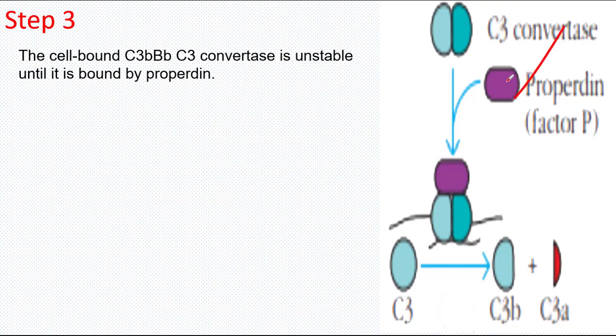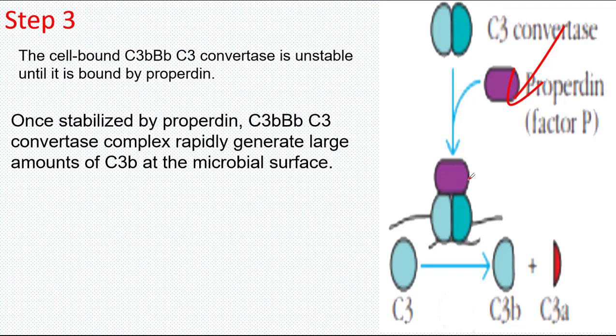The cell-bound C3BB Convertase, which was formed in the previous step, is unstable, so it is bound by properdin protein or Factor P. Once stabilized by properdin protein, C3 Convertase cleaves many molecules of C3 into C3 Beta and C3 Alpha fragments.